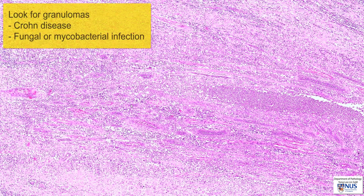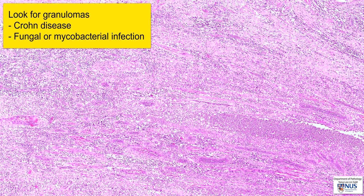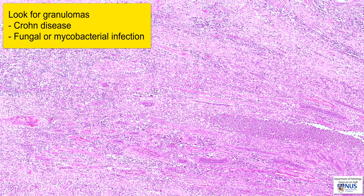In examining fistulae, we should also look for epithelioid granulomas, which could mean that this patient potentially may have inflammatory bowel disease, such as Crohn's disease, which predisposes to anal fistulae, or an infectious process, for example, TB or a fungal infection.